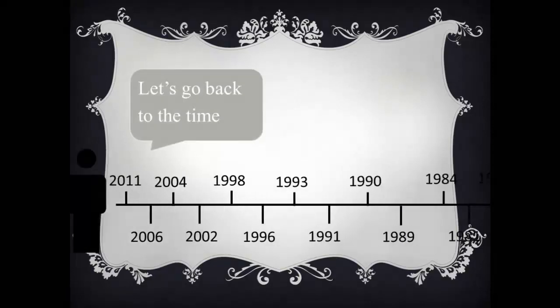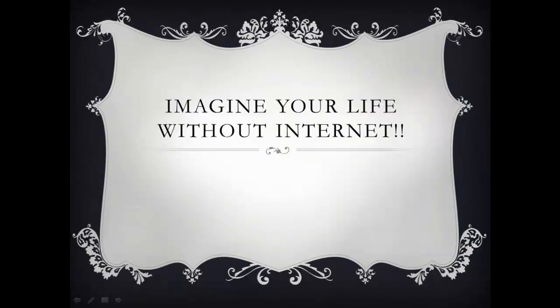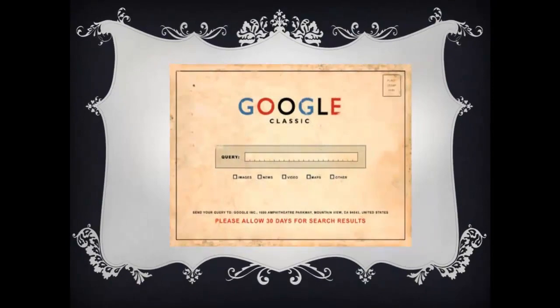But this was not always so. Want to know how this all started? Let's follow the time track from 1957 when it all started. Now let's imagine your life without internet. If we had Google at that time, how would it look like? It would take 30 days for our search query.